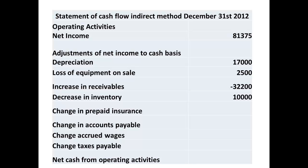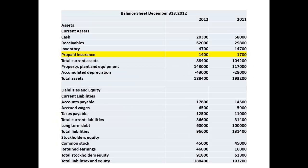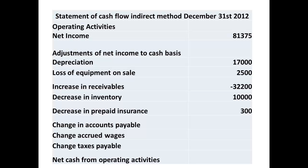Now we look for any changes in prepaid insurance. Using the balance sheets, we see that the prepaid insurance has decreased from $1,700 to $1,400. We are going to add this figure back.